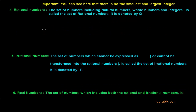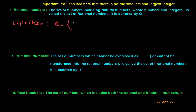Now let us come to rational numbers. Rational numbers are those numbers which include natural numbers, whole numbers, and integers. It is called the set of rational numbers and it is denoted by capital Q. As far as the definition of a rational number is concerned, Q is the set of all numbers which are in the form of P by Q, where Q is not equal to 0 and P and Q are integers.